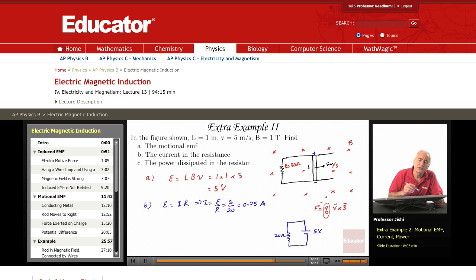What is the power dissipated in the resistor? What is the potential difference across the resistor? IR. I is 0.25, R is 20, so it's 5 volts.